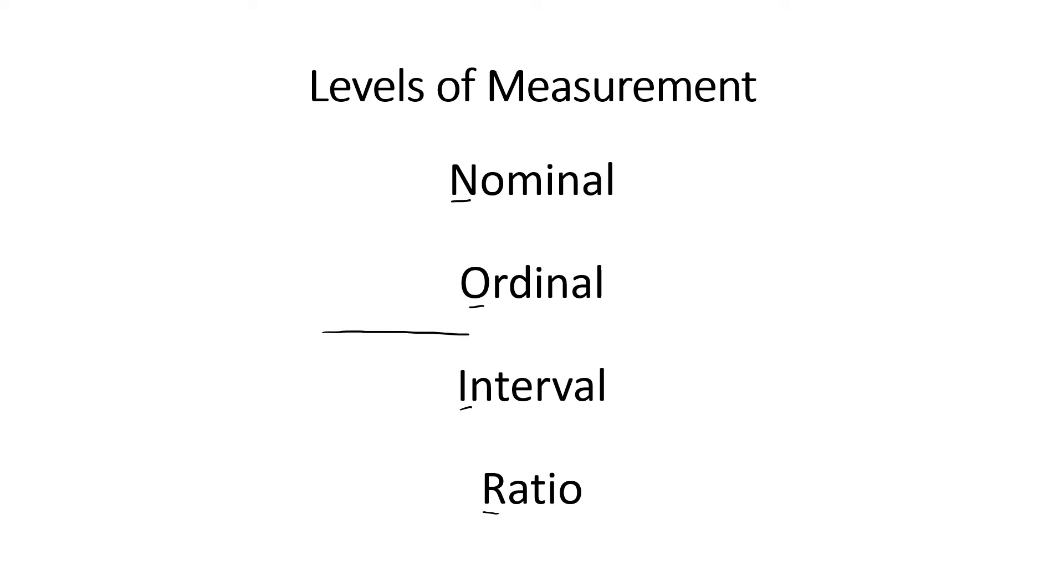First, there's a split between the top two and the bottom two. Nominal and ordinal data are data that are qualitative, categorical. Interval and ratio data, those are numerical data, quantitative.